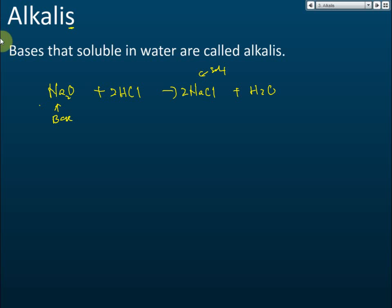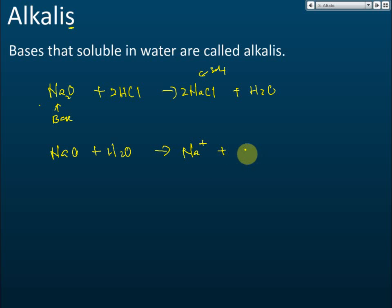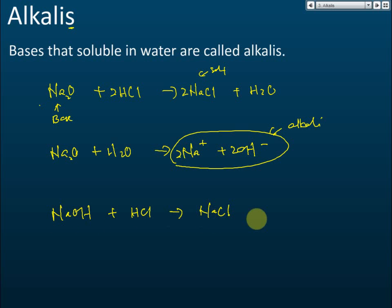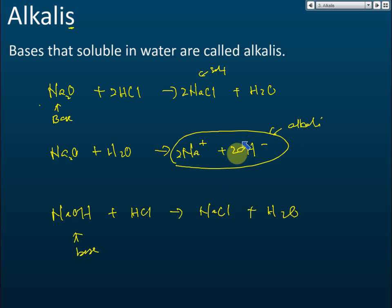When this base dissolves in water, it forms sodium ions and hydroxide ions — so it is also an alkali. Sodium hydroxide is therefore both a base and an alkali. It can also react with hydrochloric acid to form sodium chloride and water, so it is a base. All alkalis can react with acid to form salt and water, meaning all alkalis are also bases.